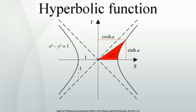In fact, Osborne's rule states that one can convert any trigonometric identity into a hyperbolic identity by expanding it completely in terms of integral powers of sines and cosines, changing sine to sinh and cosine to cosh, and switching the sign of every term which contains a product of 2, 6, 10, 14... sinhs.